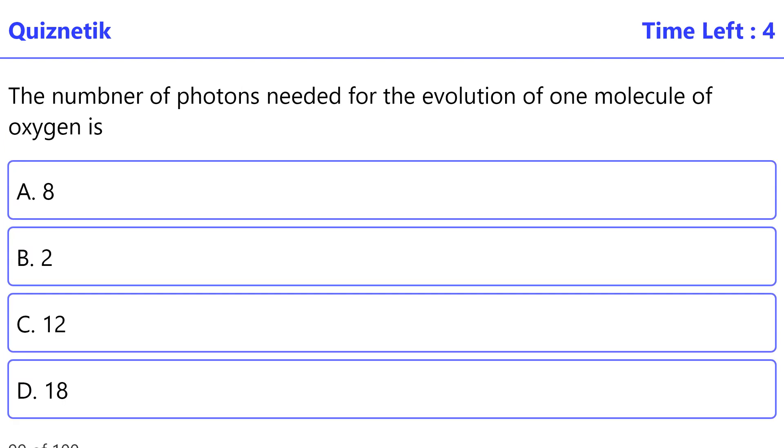The number of photons needed for the evolution of one molecule of oxygen is - the correct option is A: eight.